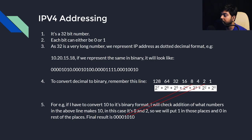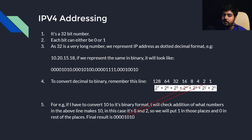So how many combinations of zeros and ones will be possible with a 32-bit long number? It's nothing but 2 to the power 32 — that is the total number of IPv4 addresses possible. And in case of IPv6, it's 2 to the power 128.